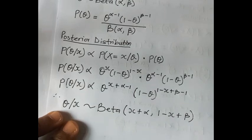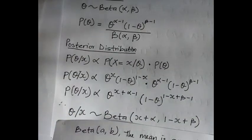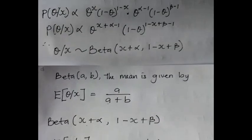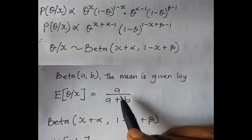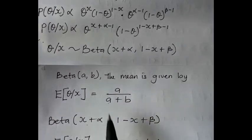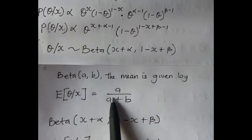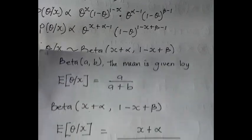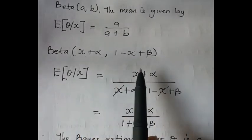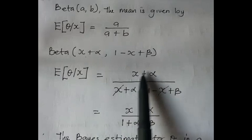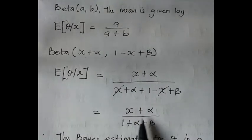This means the posterior distribution of theta given X is Beta(X + α, 1 - X + β). To get the Bayes estimator under the squared error loss function, we take the mean of the posterior. For the beta distribution, the mean is a/(a + b), so we substitute the values of a and b.